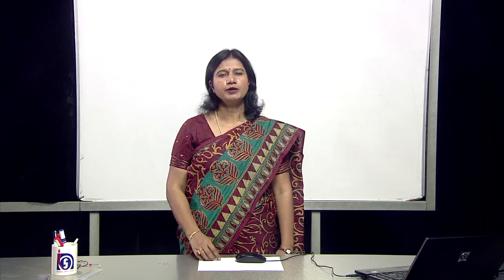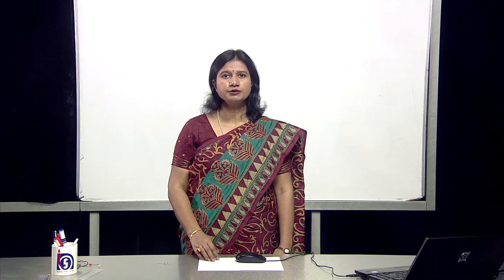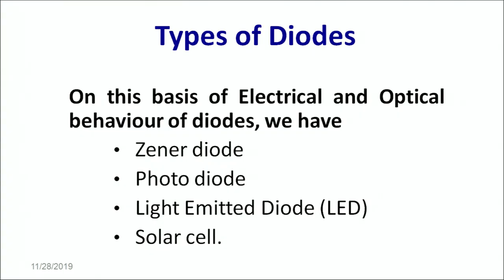Hello learners, welcome to NIOS studio. Today we are going to talk about different types of diodes. A simple p-n junction diode is what we have discussed in the previous lecture. Now on the basis of the electrical and optical behavior of the diodes, we have four different kinds: a zener diode, a photodiode, a light emitting diode, and a solar cell. To begin with, let's talk about the zener diode.